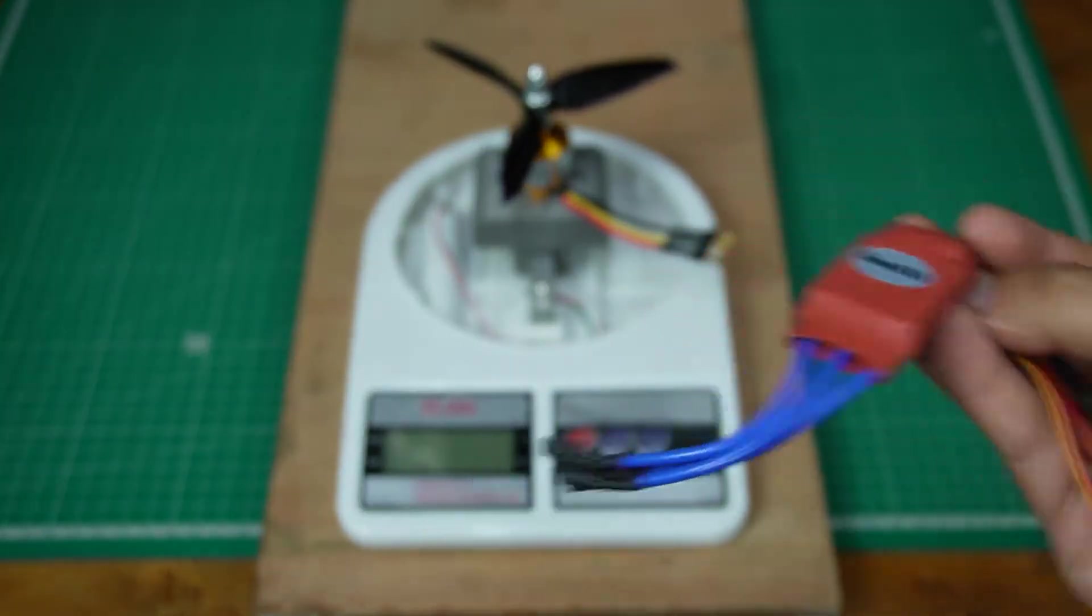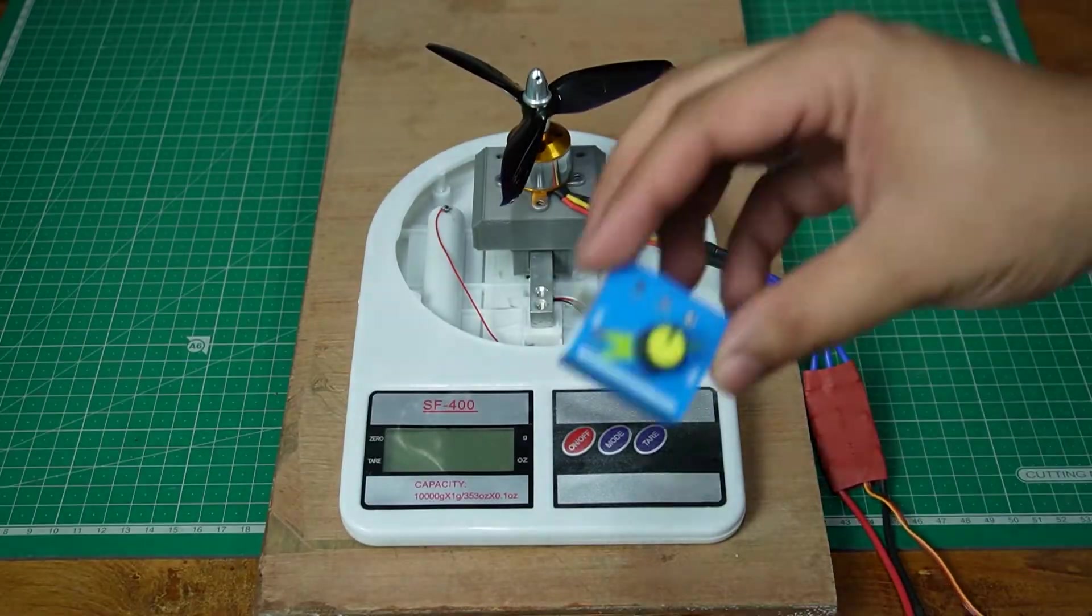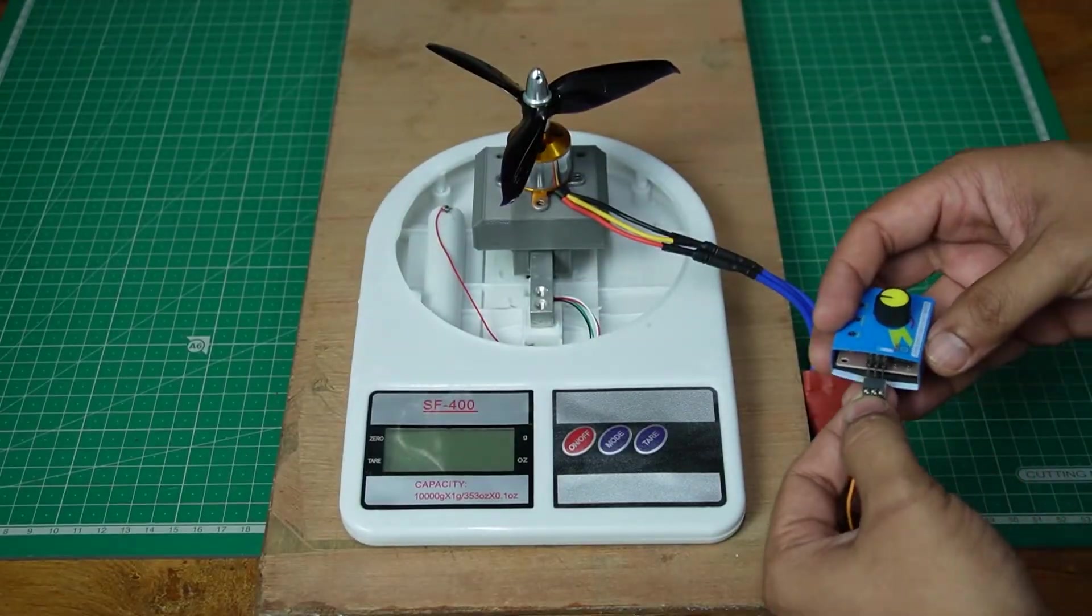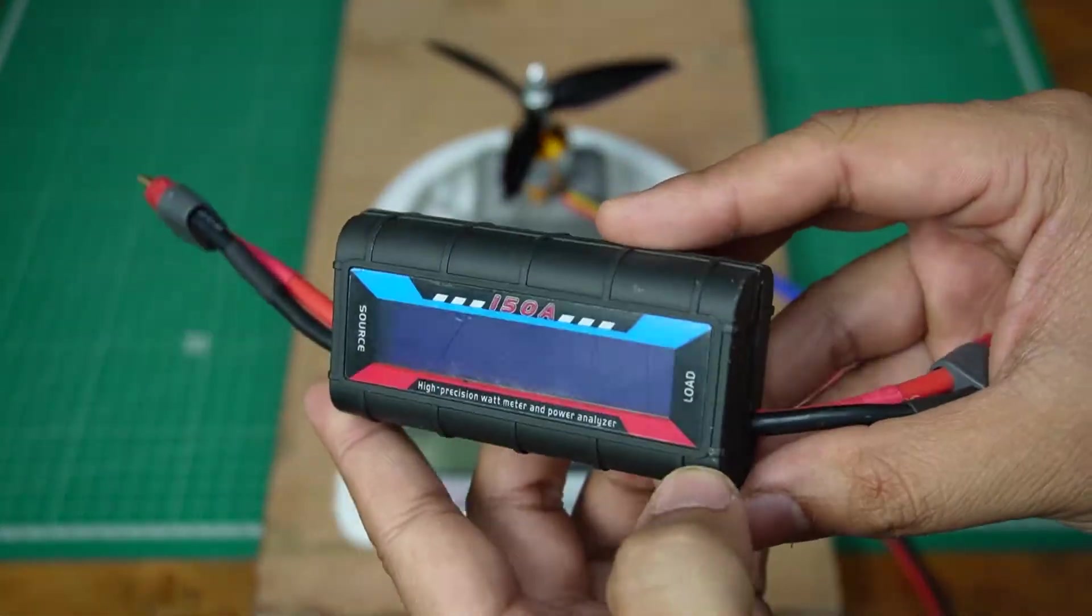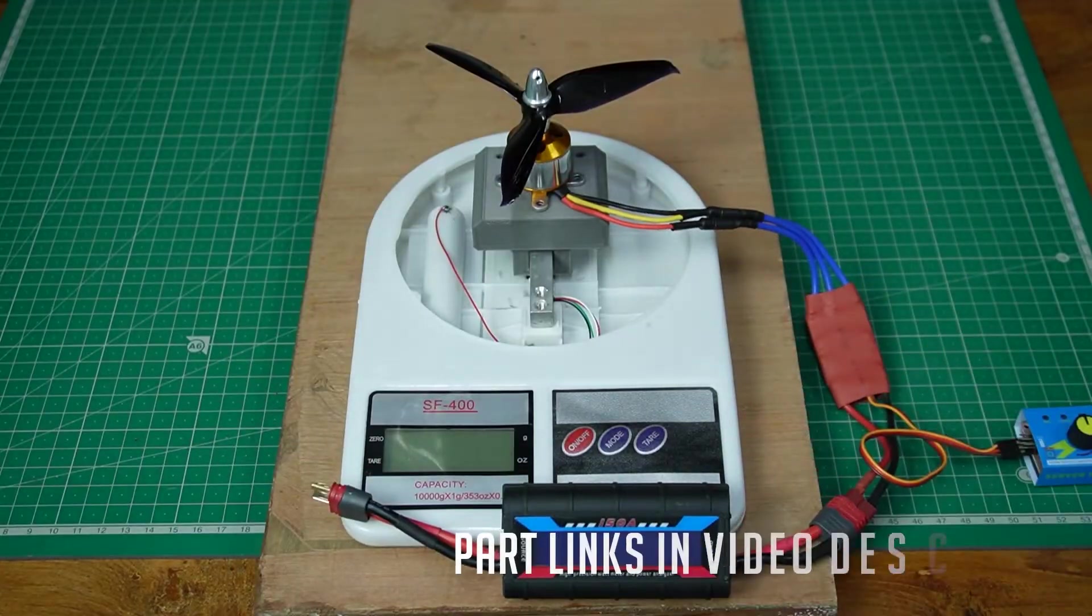Attach all the electronics: the ESC, servo tester to control the throttle, a DC current meter to check the current, and a high discharge battery.